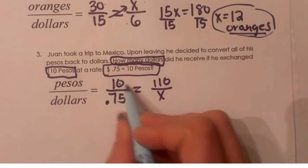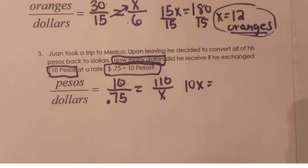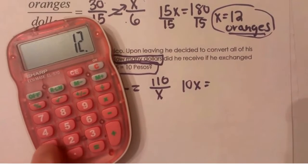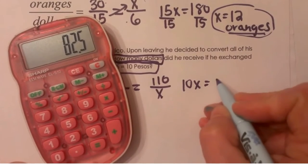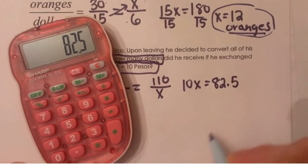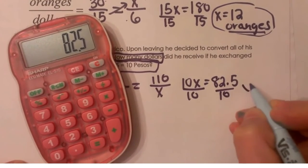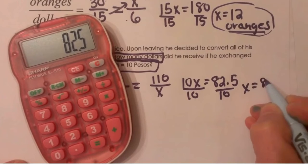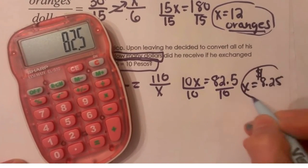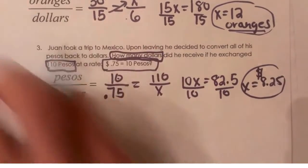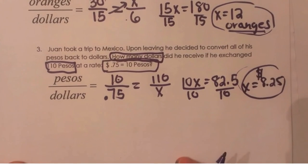Cross multiply, 10 times X is 10X and 110 times 0.75 is 82.5. Divide by 10, and we know X must be 8.25 and that would be in dollars because remember that was our unknown. Our X is on the bottom and X is dollars so that's the value. Hope this video was helpful.